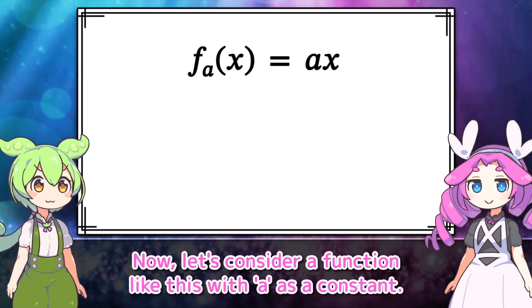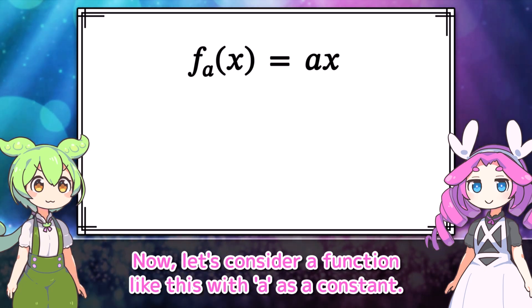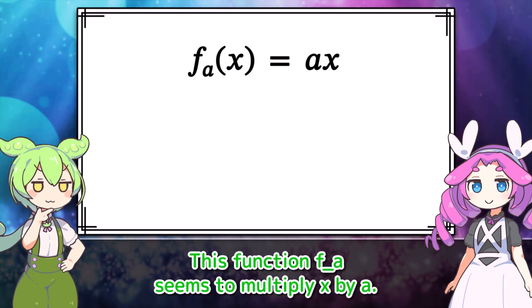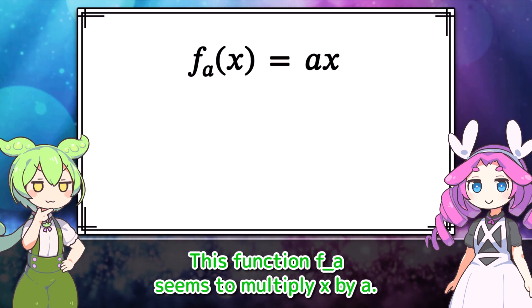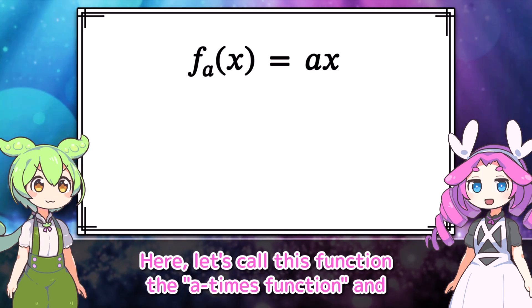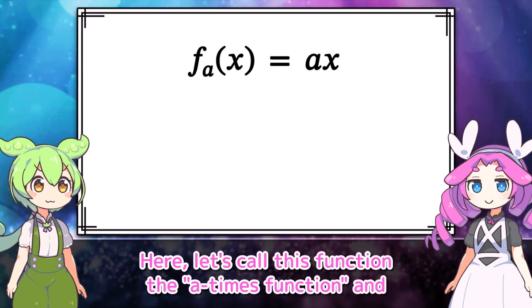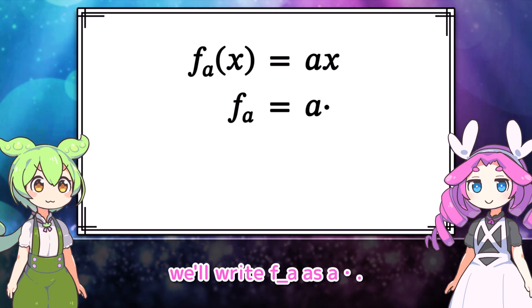Now let's consider a function like this with a as a constant. This function f sub a seems to multiply x by a. That's correct. Let's call this function the 'a times function', and we'll write f sub a as a·dot.